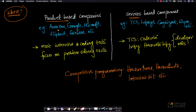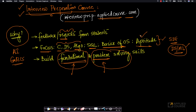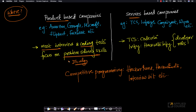Typically, product-based companies like Amazon, Google, Microsoft, Flipkart, Facebook, etc. — almost every interview you encounter and every coding test you might take before being called to an interview — focus on problem-solving skills revolving around data structures and algorithms. You might have a few aptitude questions or SQL questions in some cases, but mostly they revolve around programming, data structures, and algorithms.